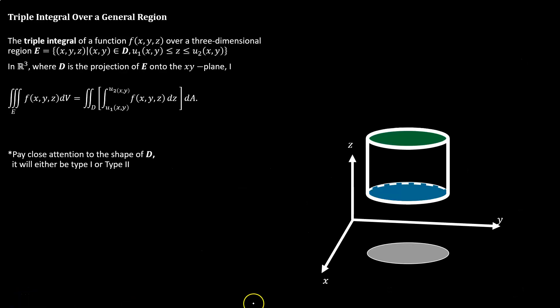When we start to look at general regions, this can feel a little more complicated. Our triple integral is over a three-dimensional region. That three-dimensional region has a projection into one of the coordinate planes. The setup I've drawn here, the three-dimensional region is this cylinder with a green top and a blue bottom. And it has a shadow in the xy plane. We call that shadow D. It's a two-dimensional shadow, not 3D.